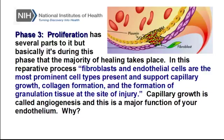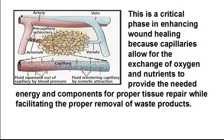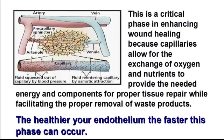Phase three, proliferation, has several parts to it, but basically it's during this phase that the majority of healing takes place. In this reparative process, fibroblasts and endothelial cells are the most prominent cell types present, and support capillary growth, collagen formation, and the formation of granulation tissue at the site of injury. Capillary growth is called angiogenesis, and this is a major function of your endothelium, because your capillaries are just extensions of the endothelium. This is a critical phase because capillaries allow for the exchange of oxygen and nutrients to provide the needed energy and components for proper tissue repair, while facilitating the proper removal of waste products. The healthier your endothelium, the faster this phase can occur.